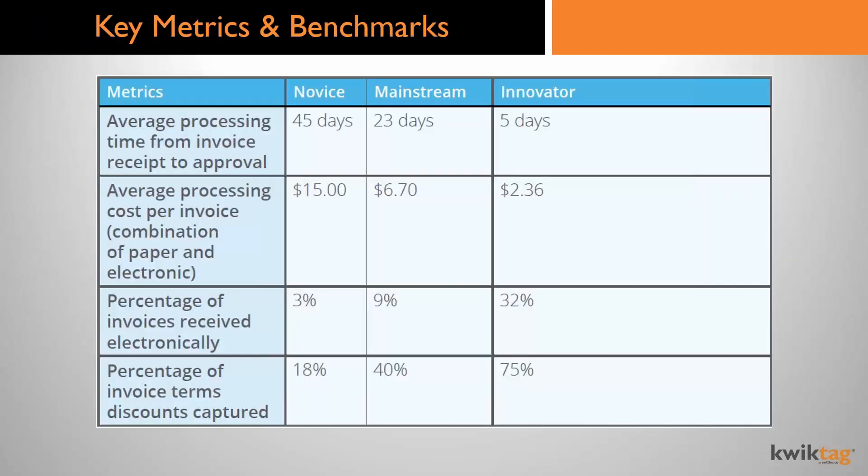Keep these data points in mind as you build your business case. Those delays, those lost invoices, the paper invoices still coming in — there's a true dollars-and-cents cost associated with that. According to industry research, you can go from 45 days down to five days — sometimes even less depending on the level of automation — when you go from processing everything manually to using an AP automation solution. The cost can go from around $15 if there's a combination of paper and email invoices coming in, or up to about $23.60 per invoice for 100% paper, all the way down to $2.36 in a fully automated approach.